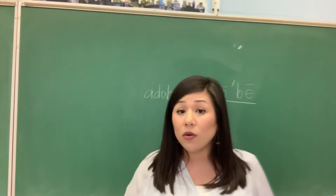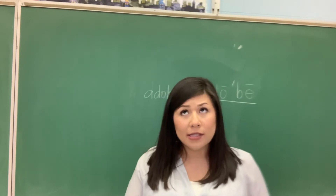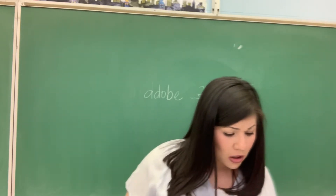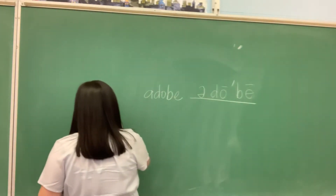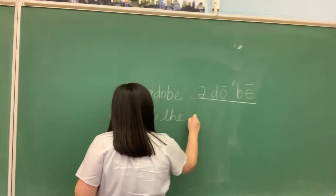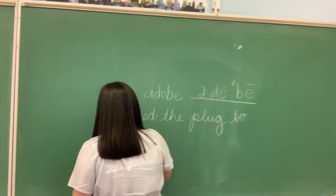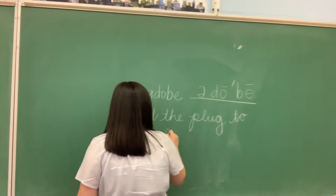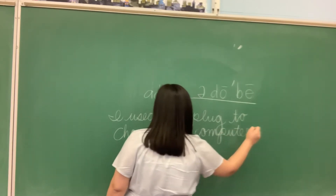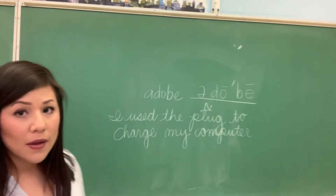If you want to use the word plug as a noun, then use it as a noun — make sure you label noun above it. If you want to use it as a verb, write verb above it. For example, I use a plug to charge my computer. Plug here is being used as a noun. So that is my sentence.